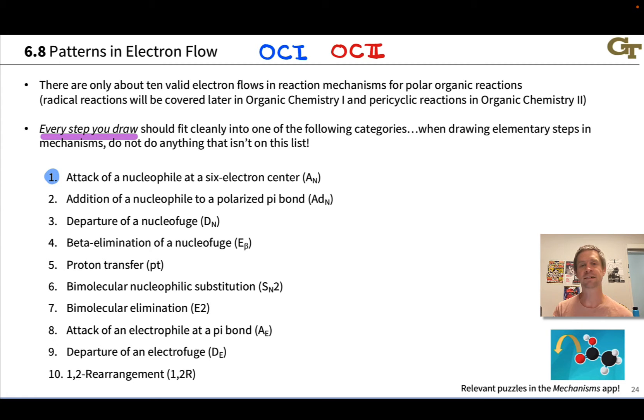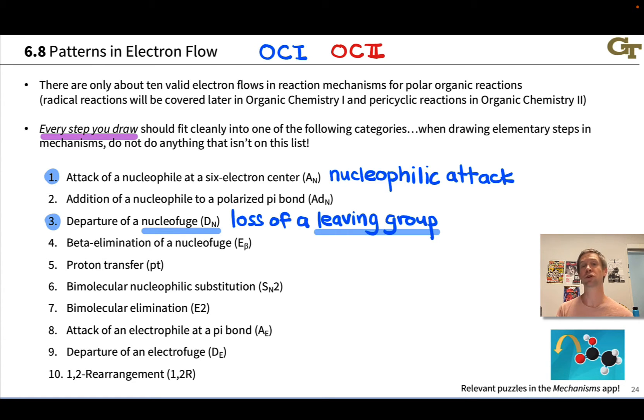So the first step here, the so-called A sub n step, we'll call that nucleophilic attack. This is the attack of a nucleophile at a six electron center like a carbocation or a group 13 element, extremely common step. Departure of a nucleofuge will more commonly call loss of a leaving group, and for our purposes a leaving group is synonymous with the term nucleofuge. This is a group that takes a pair of electrons with it when it breaks off from an organic molecule, typically forming a stable anion or neutral molecule containing a lone pair.